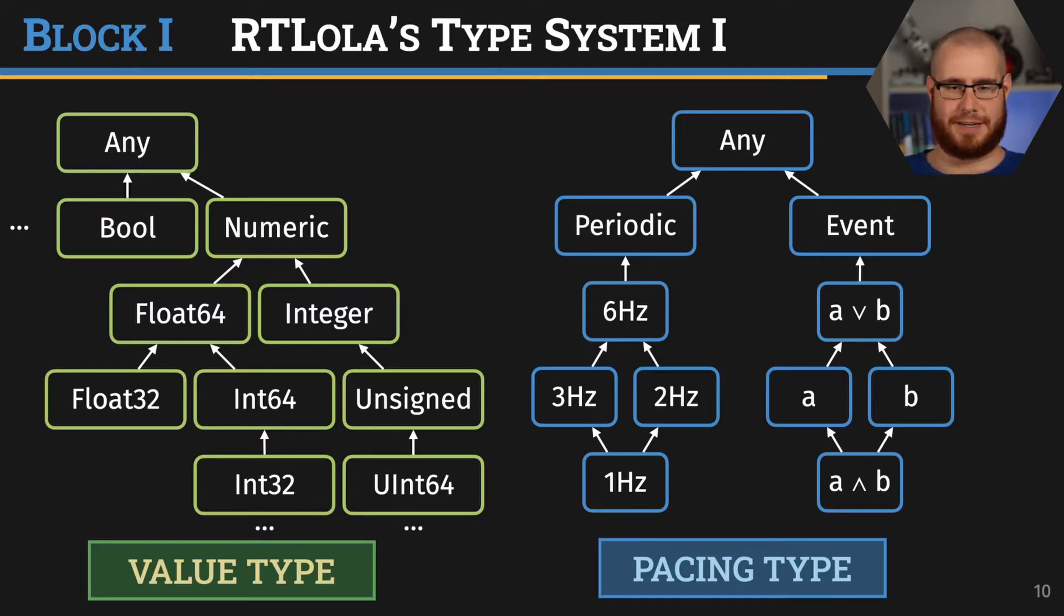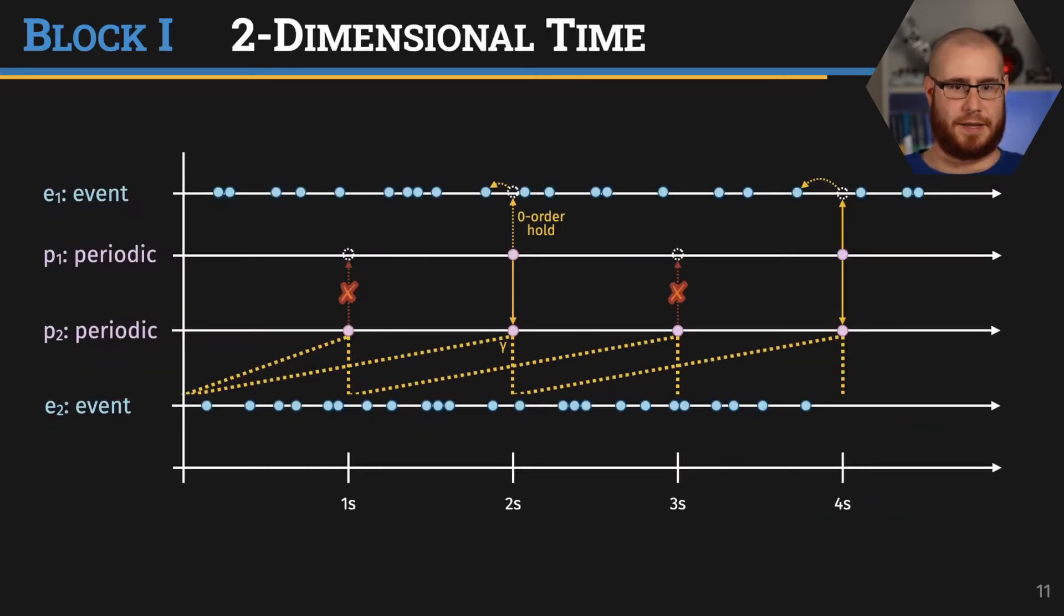The different types dictate how streams can access other streams. Let's have a look at an example with four streams: two event streams and two periodic streams. We can see that stream P2 is evaluated twice as often as P1. That means if P1 accesses P2 synchronously, whenever we evaluate P1 we access the latest value of P2, which has to be computed at the same point in time. This works out because whenever P1 is computed, P2 will also be computed.